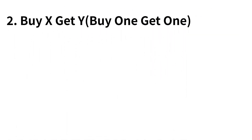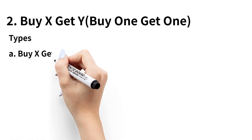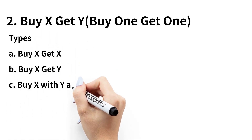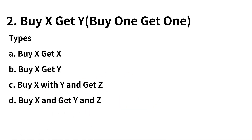The second way is buy X get Y, commonly known as buy one get one. This type of gifting can be classified into four types: buy X get X, buy X get Y, buy X with Y and get Z, and buy X and get Y and Z.